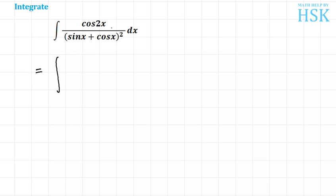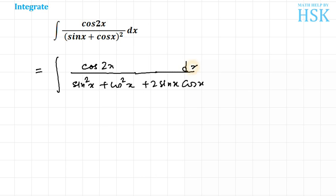First of all, cos 2x I write as it is, and sine x plus cos x whole square I open the bracket by squaring it. This will be equal to sine square x plus cos square x plus 2 sine x cos x. Sine square x plus cos square x will be equal to 1, this is a well known formula, and 2 sine x cos x is equal to sine 2x.